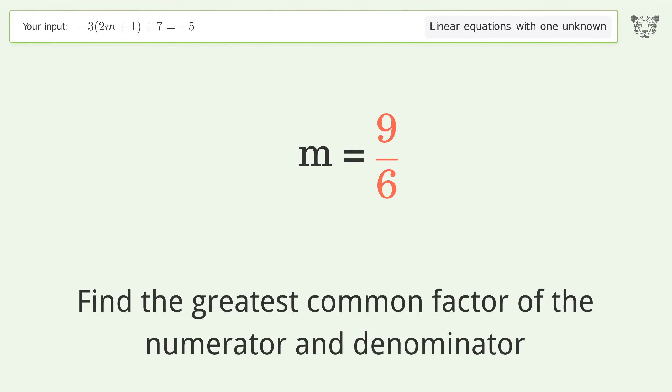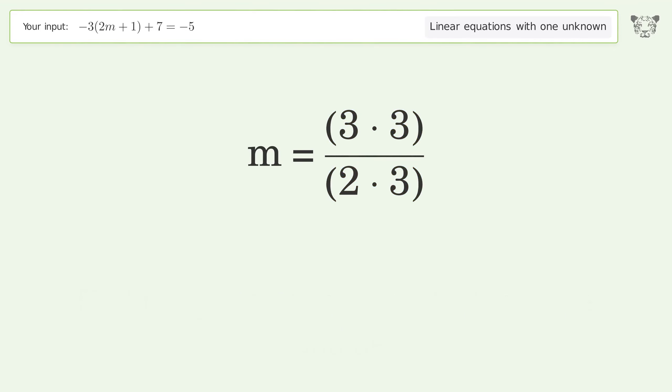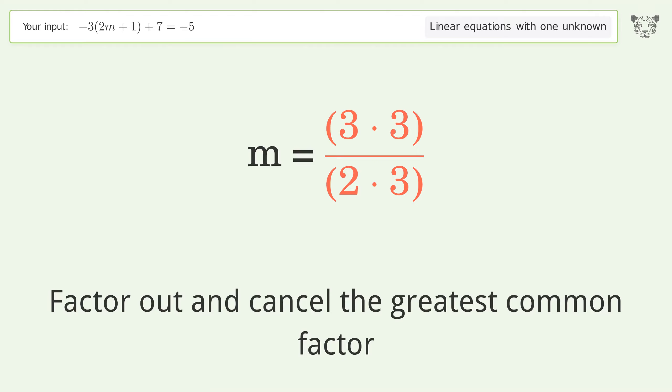Find the greatest common factor of the numerator and denominator. Factor out and cancel the greatest common factor.